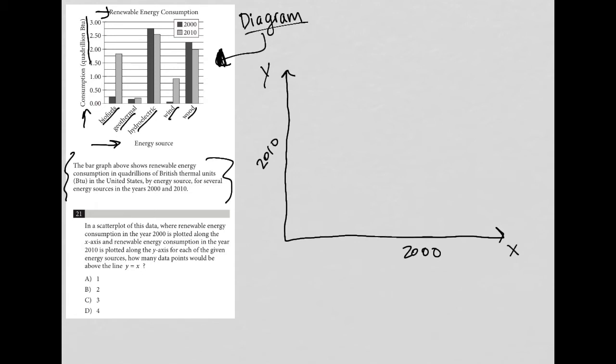How many data points would be above the line y equals x? So if we think about the line y equals x, it's going to be a line that cuts this quadrant directly in half. I know that line is not perfect, I didn't use a ruler, but it gives us a good visual of what we expect to happen.